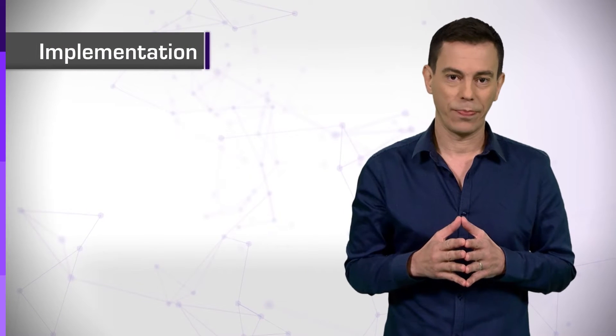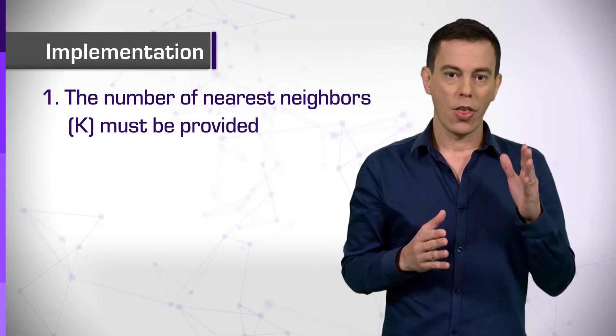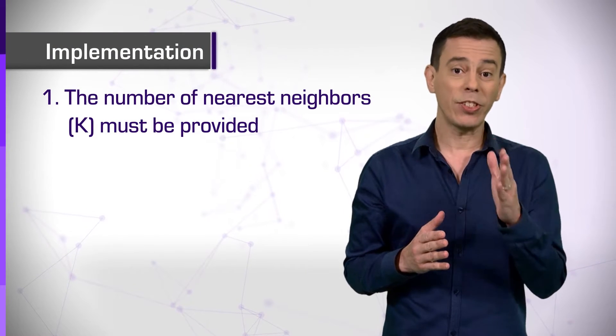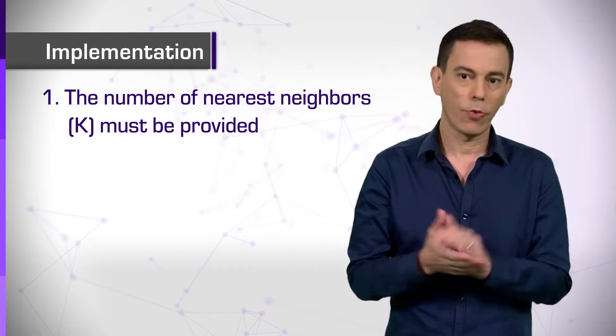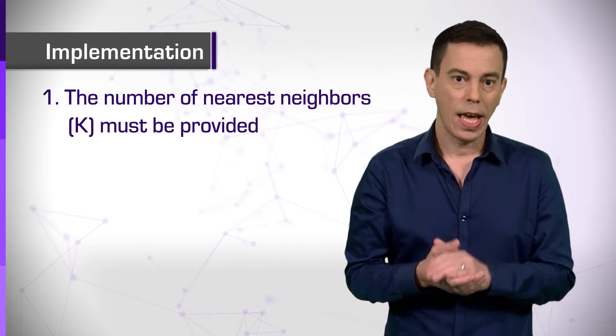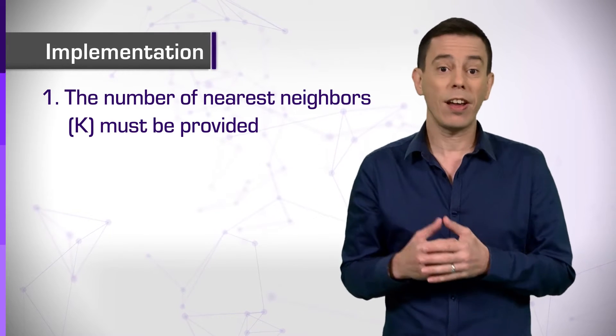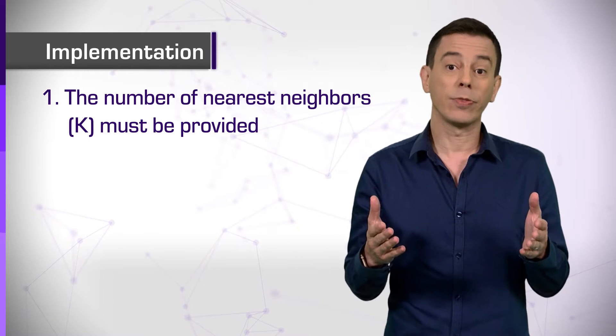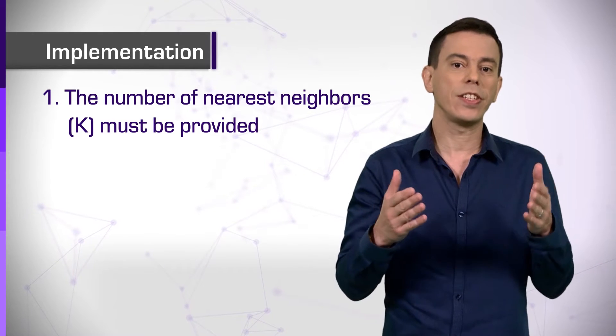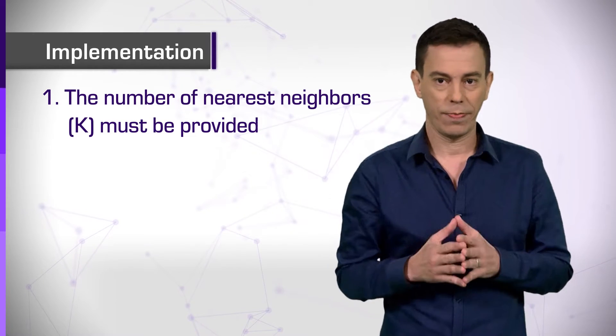Implementation. The number of nearest neighbors, k, must be provided. It must be known before running the algorithm. In many circumstances, this is not the case.